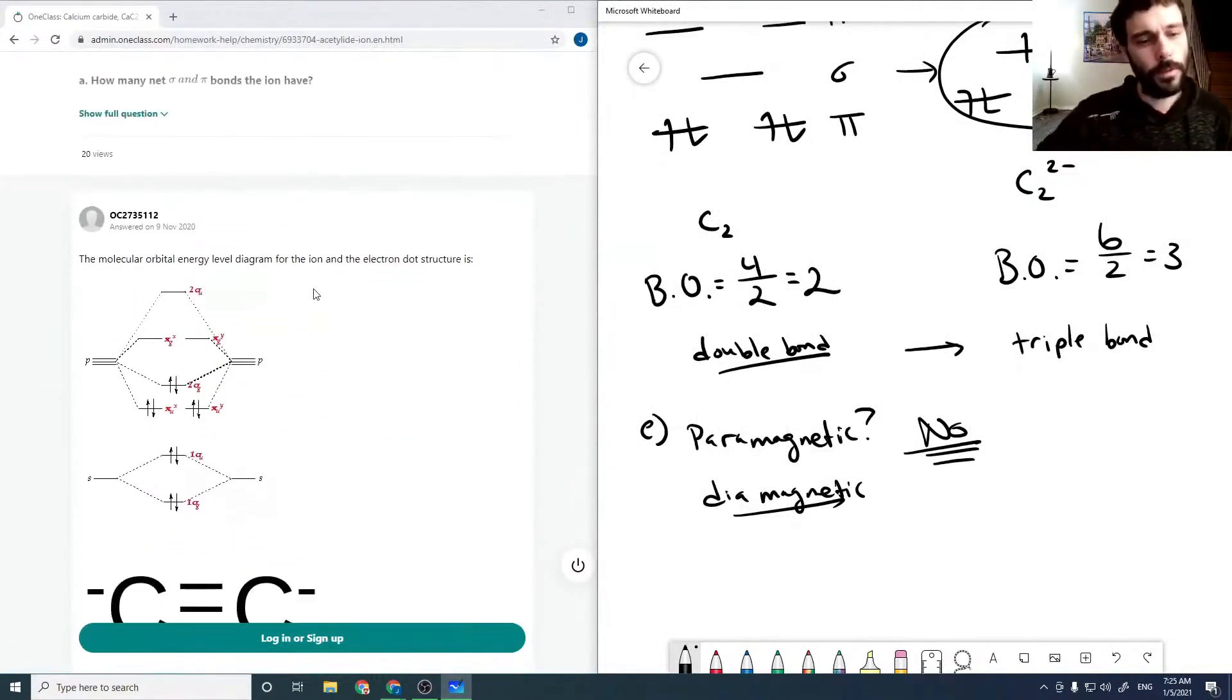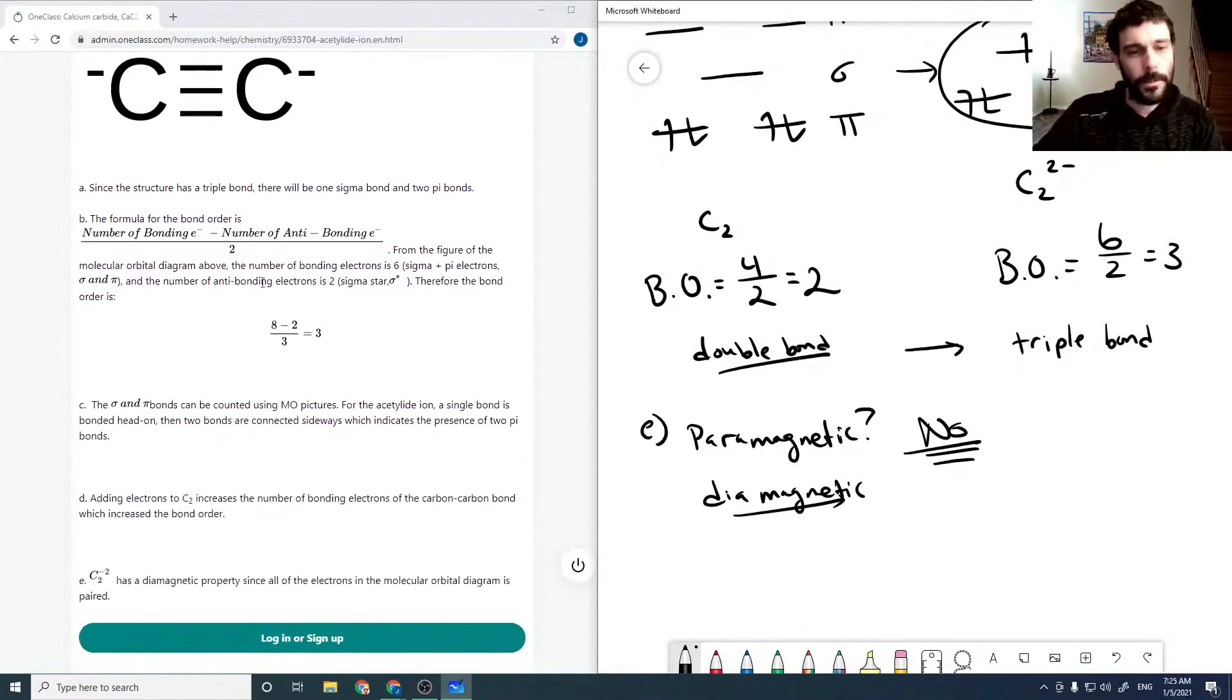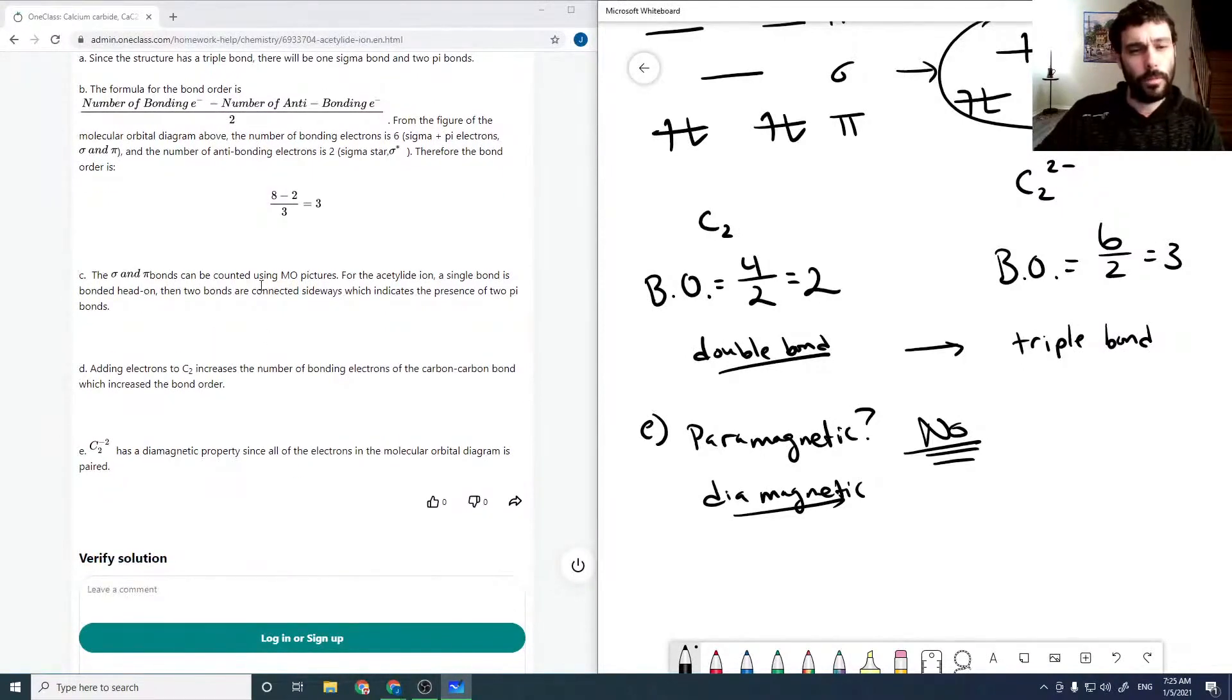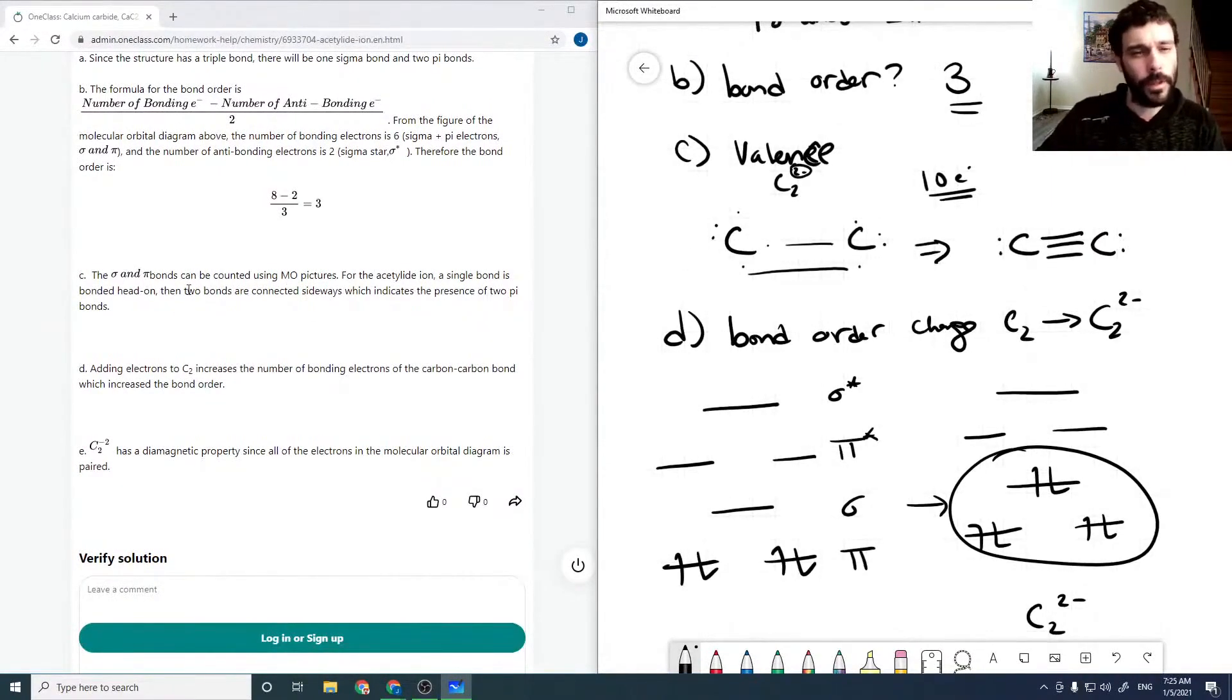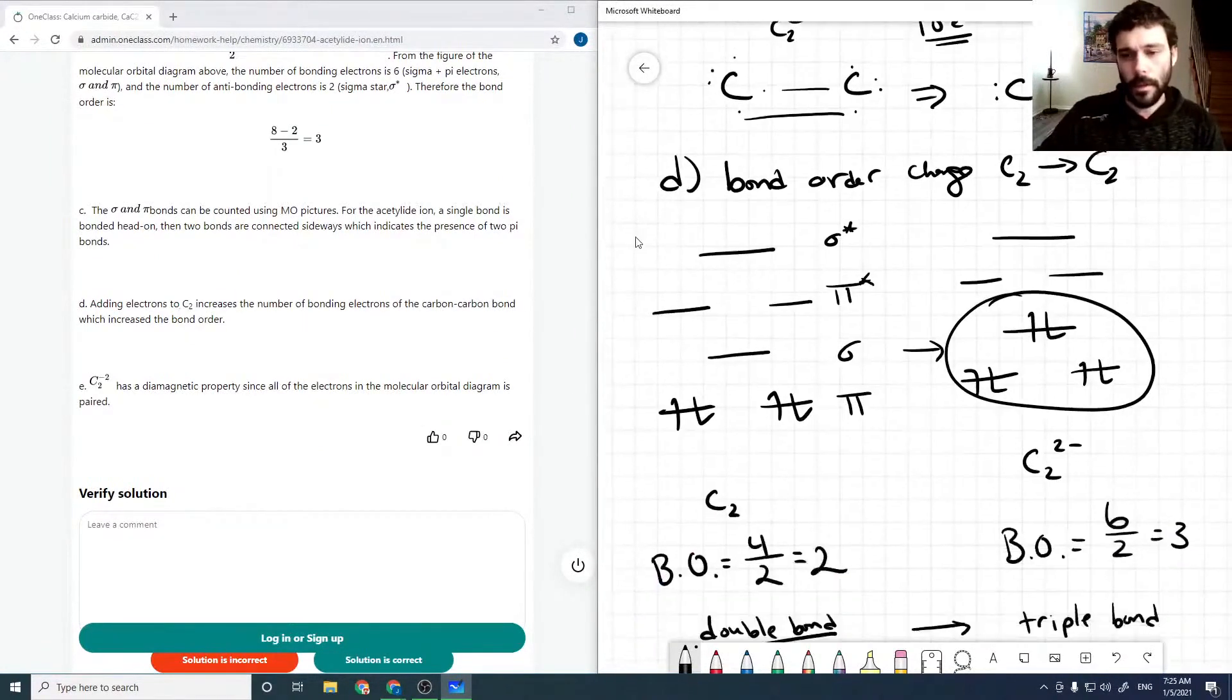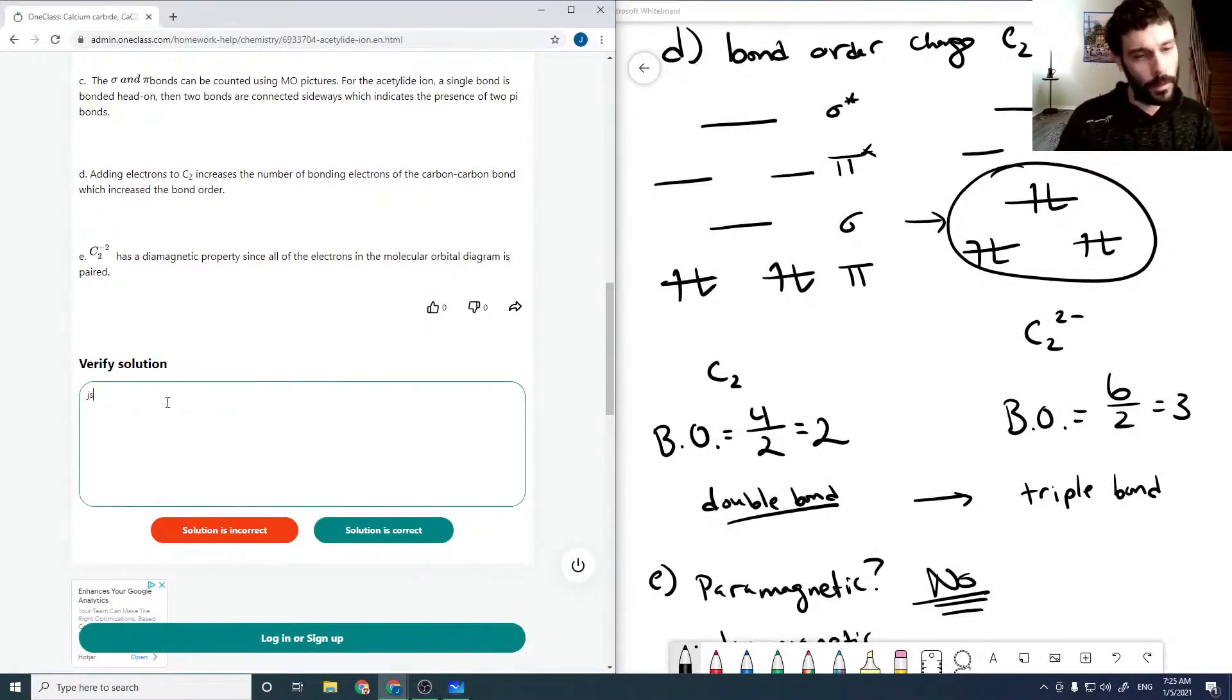So now if we look down through the solutions given, it's a triple bond. So there's one sigma two pi bonds. Our bond order can be computed with this equation, which comes out to be three. For C, valence bond theory gives us three. So adding electrons increase the bond order. Specifically we went from two to three. And C2 2- is diamagnetic since they're all paired. That looks good.